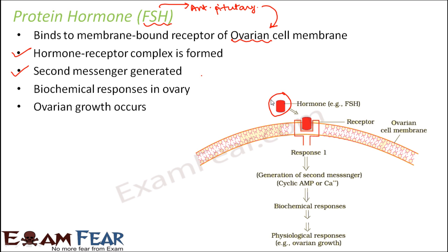The follicle-stimulating hormone released by the pituitary gland travels through the blood. Only when it sees the receptors present on the ovarian membrane will it bind to them, forming the hormone-receptor complex. Therefore, a second messenger will be generated. The second messenger can be anything like calcium ions or cyclic AMP. These second messengers will result in biochemical responses which in turn will result in physiological responses. This is how FSH works.